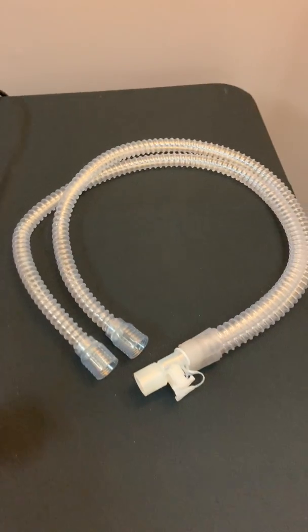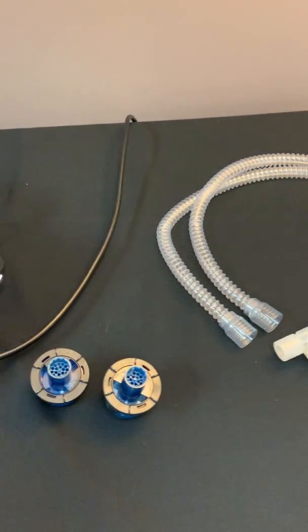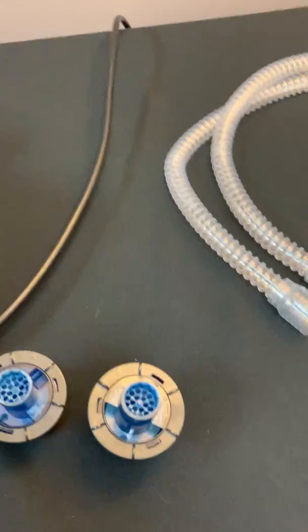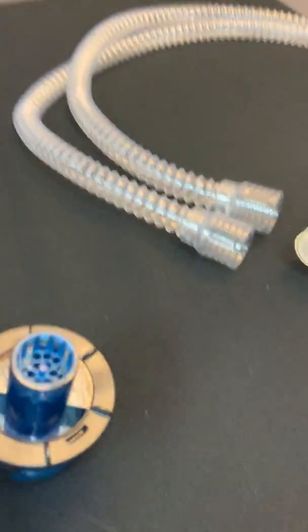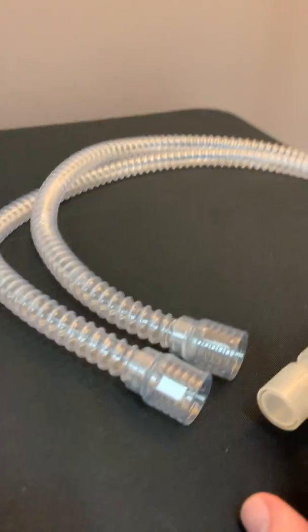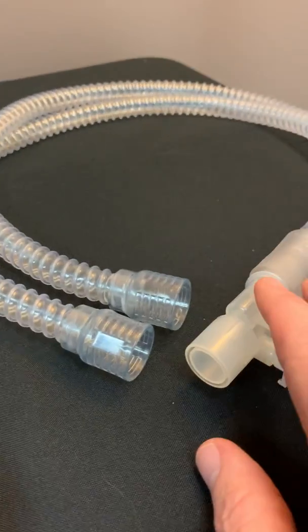So what you're going to need is a couple of things. You'll need a dual limb circuit and you're going to need one of these exhalation valves. So the Vivo 65 does not require a proprietary circuit.